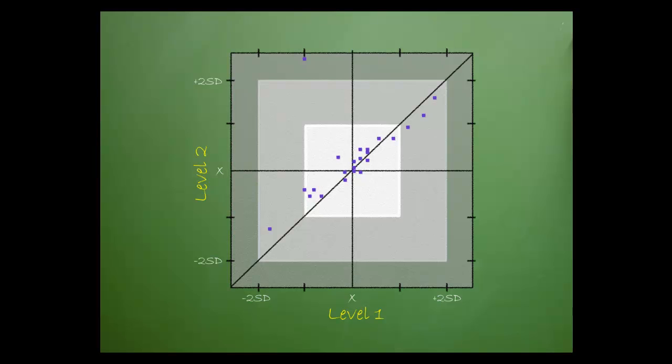Points that are near the angled line and within 1 or 2 standard deviation squares show acceptable results. Points that lie near the angled line but are outside the 2 standard deviation square indicate systematic error. Points that lie far from the angled line indicate random error.